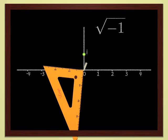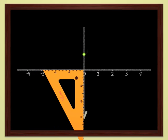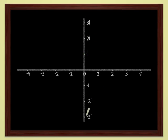We can represent 2i, 3i, and so on. Each point in the plane represents a complex number, and, conversely, each complex number defines a point in the plane.